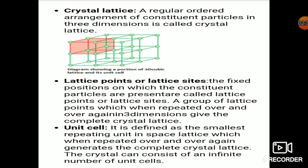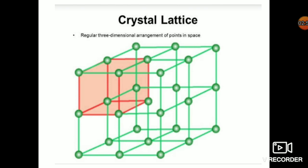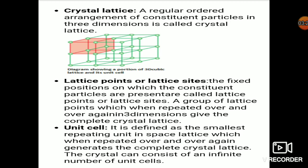A group of lattice points which, when repeated over and over again in three-dimensional space, give the complete crystal lattice. Now, the crystal lattice is very complex to understand, so we divide the whole crystal lattice into a smaller three-dimensional part. This smaller part is repeated throughout the crystal and is called the unit cell. The unit cell is defined as the smallest repeating unit in the space lattice which, when repeated over and over again, generates the complete crystal lattice.